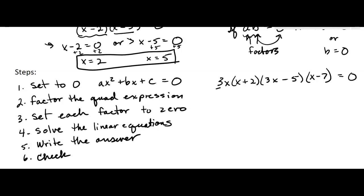But you would set each factor to zero. So how many factors are there? There's 3. There's x. There's x plus 2. 3x minus 5. And x minus 7. So which ones can be zero?